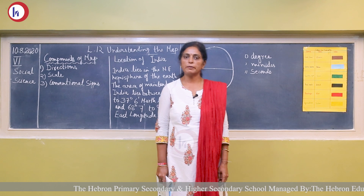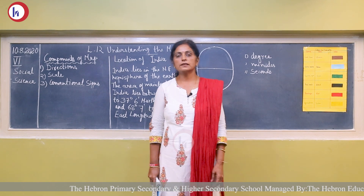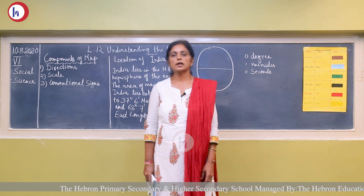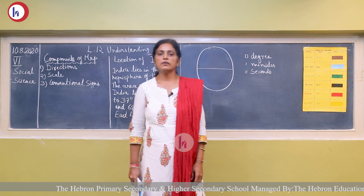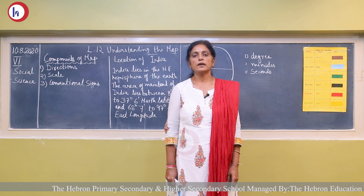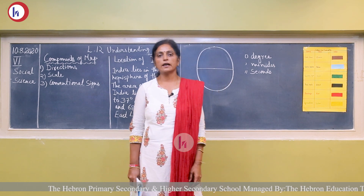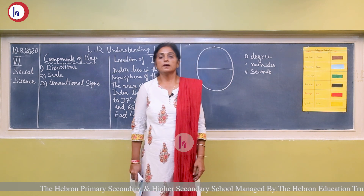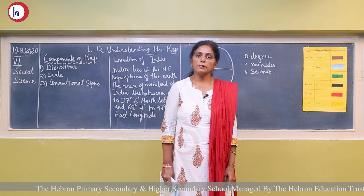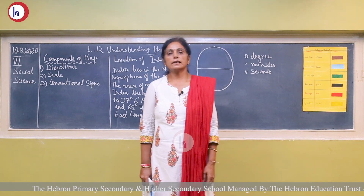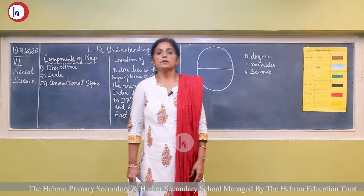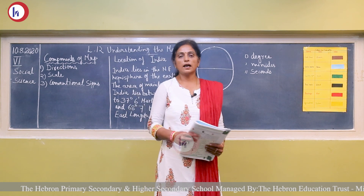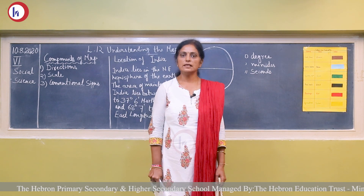Definite alphabets, shadow, light, colors, pictures, and lines are used to show conventional signs. Conventional signs of the map are very simple in language and universally accepted. There is an international agreement regarding these symbols used in the map. Now, let us learn how to draw the conventional signs.